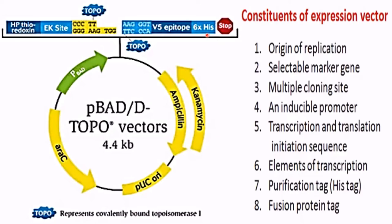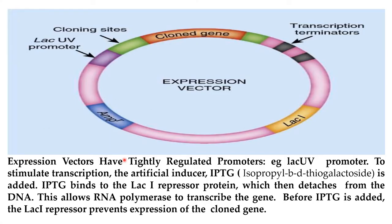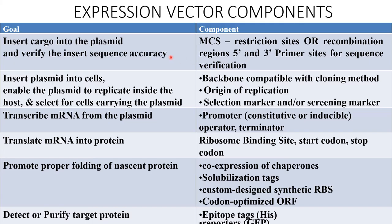The histidine number is 6, which is why it is represented as 6x histidine. Expression vectors have a tightly regulated promoter — for example, the lac UV5 promoter. To stimulate transcription, the artificial inducer IPTG (isopropyl-β-D-thiogalactoside) is added. IPTG binds to the lacI repressor protein, which then detaches from the DNA, allowing RNA polymerase to transcribe the gene. Before IPTG is added, lacI prevents expression of the cloned gene.